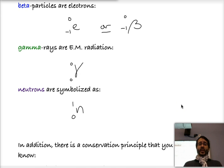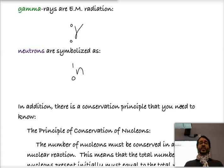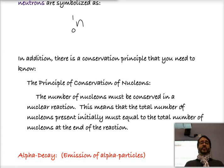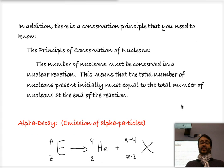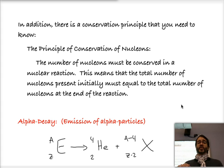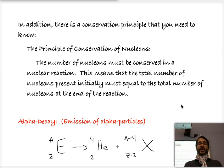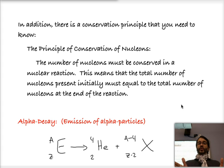The final thing that we need to know or remember is that there is such a thing as the principle of conservation of nucleons. That means that the number of nucleons at the beginning of the reaction must equal the number of nucleons at the end of the reaction. So the number of protons must remain constant throughout the reaction, and the number of neutrons must remain constant throughout the reaction.